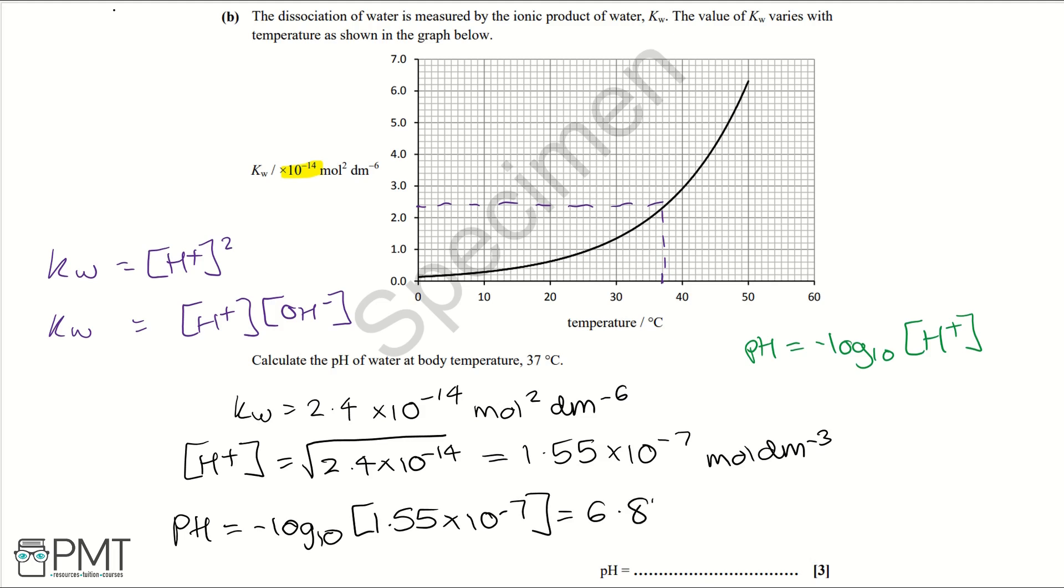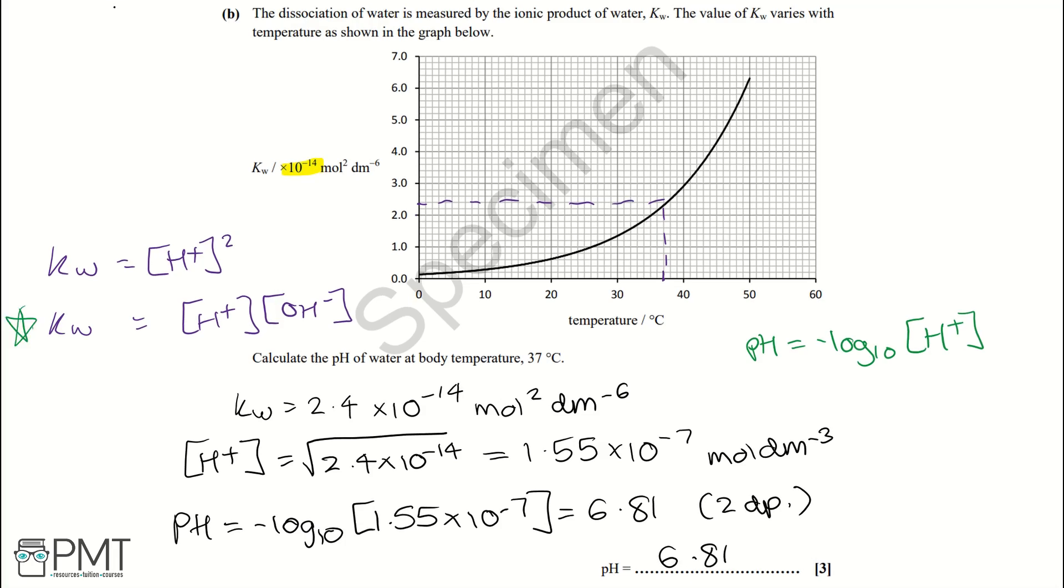And that equals 6.81 to two decimal places, which we then write on the answer line provided. And here where I've noted Kw, the reason why we can assume that the concentration of H⁺ equals the concentration of OH⁻ is because the solution is not overly dilute or acidified.